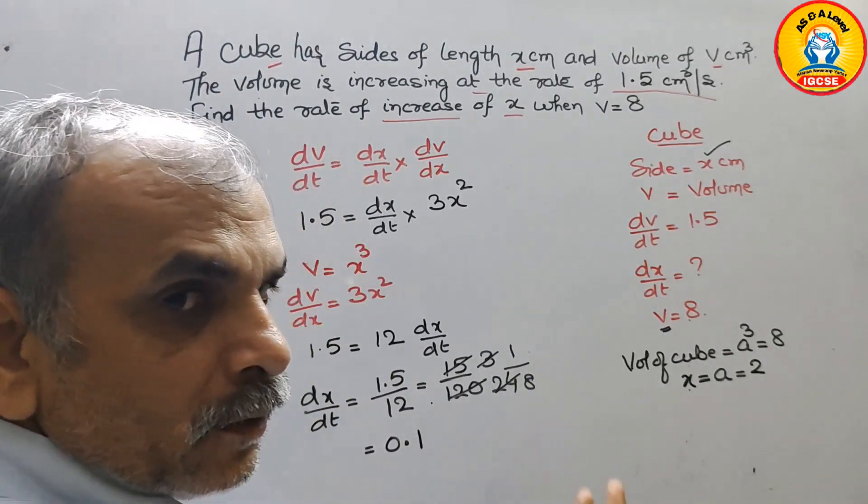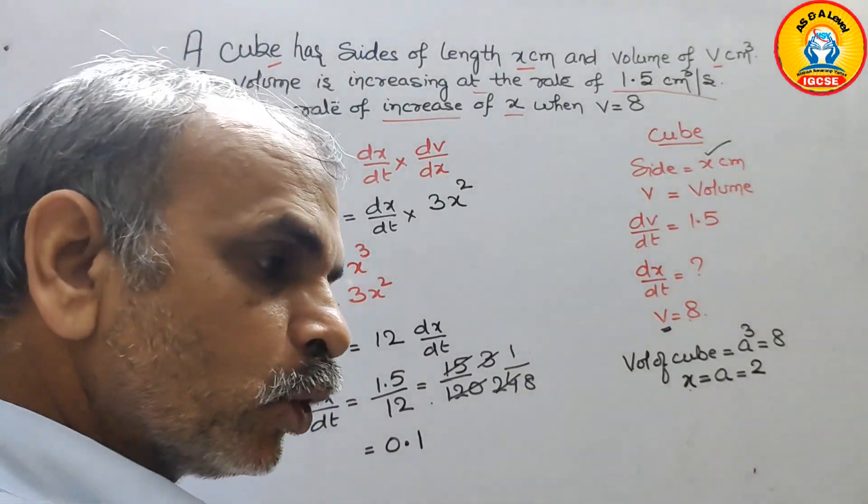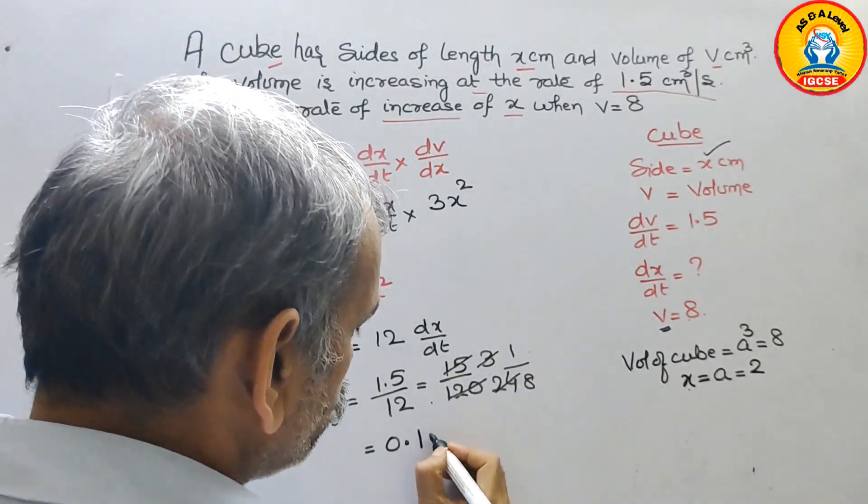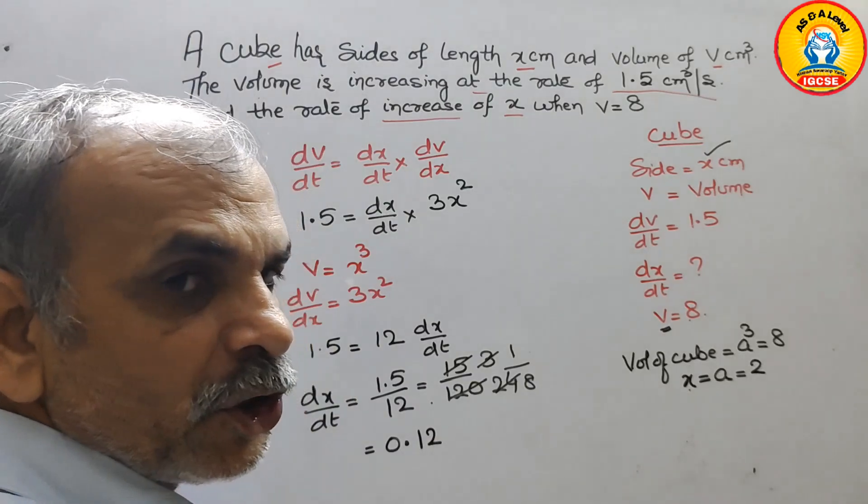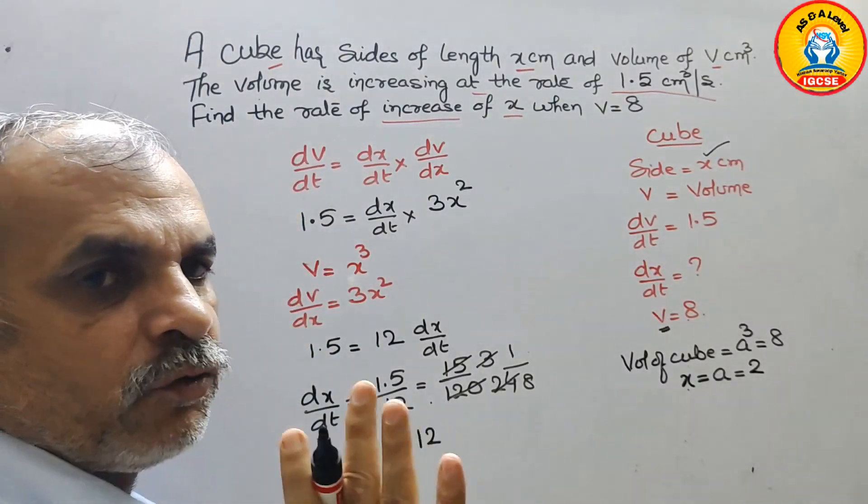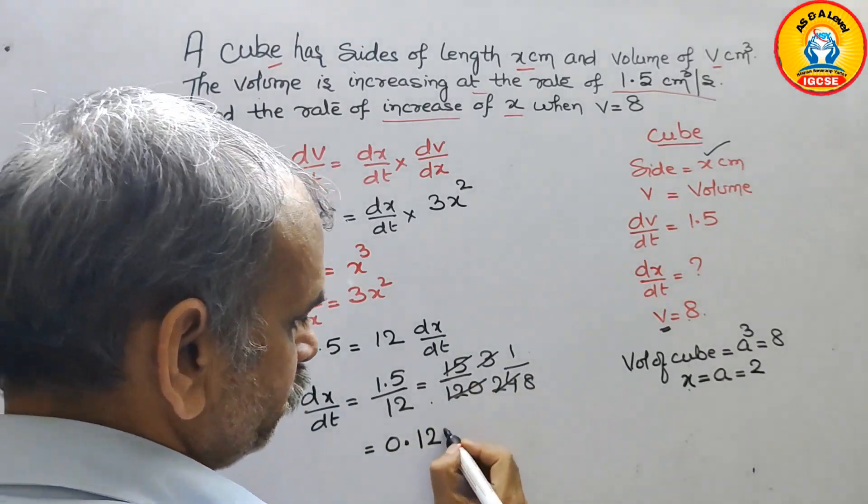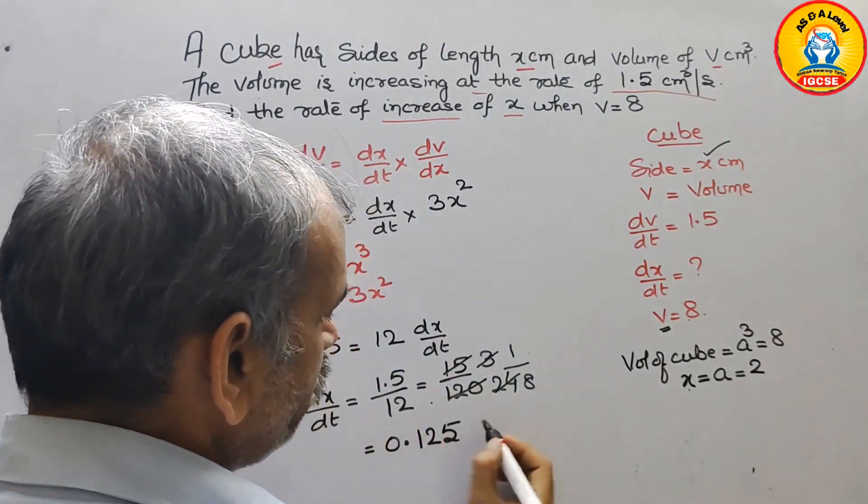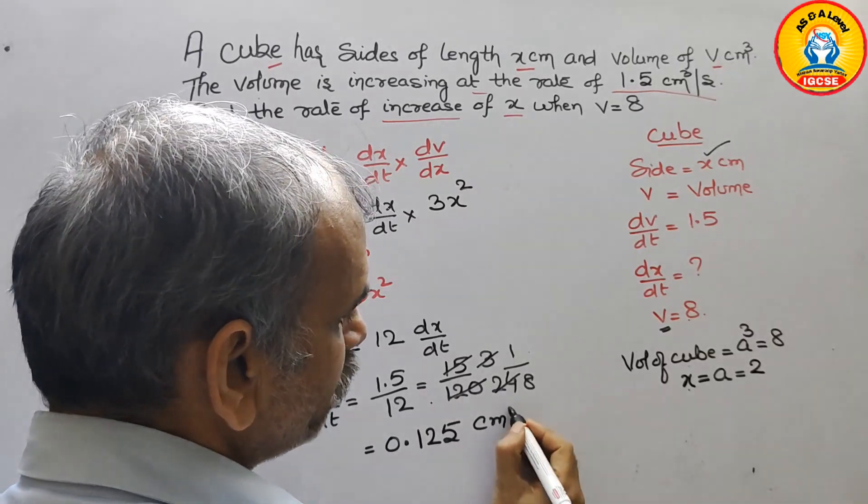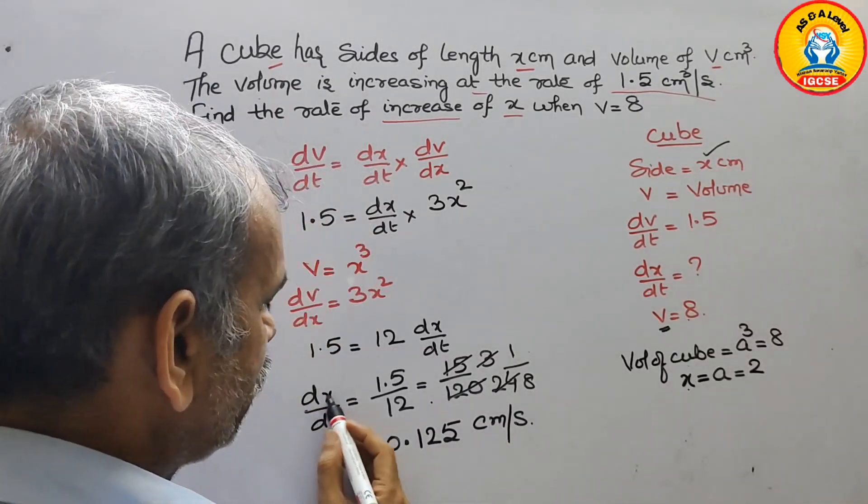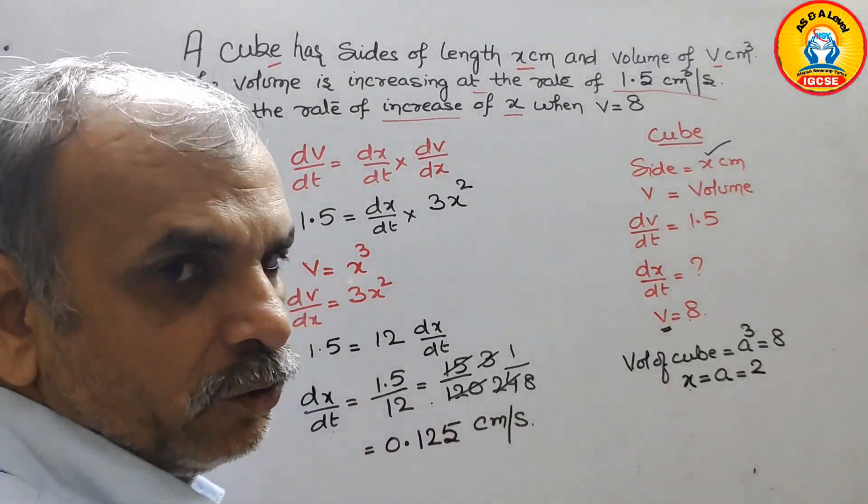So 1. 10 minus 8 is 2. So 2, 0, 20. That means 2 times 8 is 16. So 20 minus 16 is 4. Then 0, 40. That means it will be 5 times. So this will be 0.125 centimeter per second. So dx by dt we have to find, which is the answer.